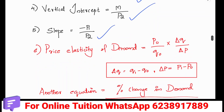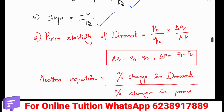The price elasticity of demand equation is P0 by Q0 into delta Q by delta P. The equations are available in other videos. In this triangle shape, delta means change — delta Q and delta P both mean change.